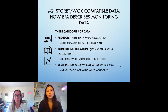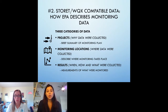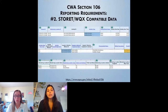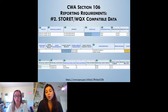There are three main categories of data that should be included when submitting water quality monitoring information. First, projects — why the data was collected and a brief summary of the monitoring plan. Second, the monitoring locations, which is where the data was collected. All the results should be tied to a specific monitoring location. And third, activities and results — when, how, and what was collected, and measurements of what was monitored. There are WQX templates available online. Using this template is a really easy way to make sure your data is compatible with all the reporting requirements.